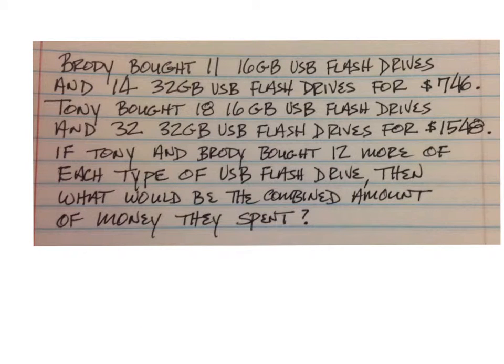Brody bought 11 16GB USB flash drives and 14 32GB USB flash drives for $746. Tony bought 18 16GB USB flash drives and 32 32GB USB flash drives for $1548. If Tony and Brody bought 12 more of each type of USB flash drive, then what would be the combined amount of money they spent?